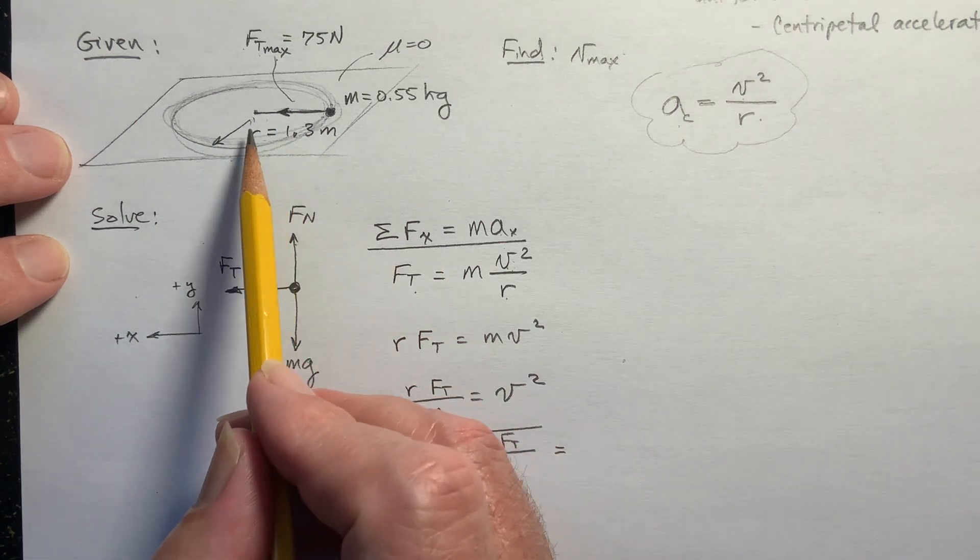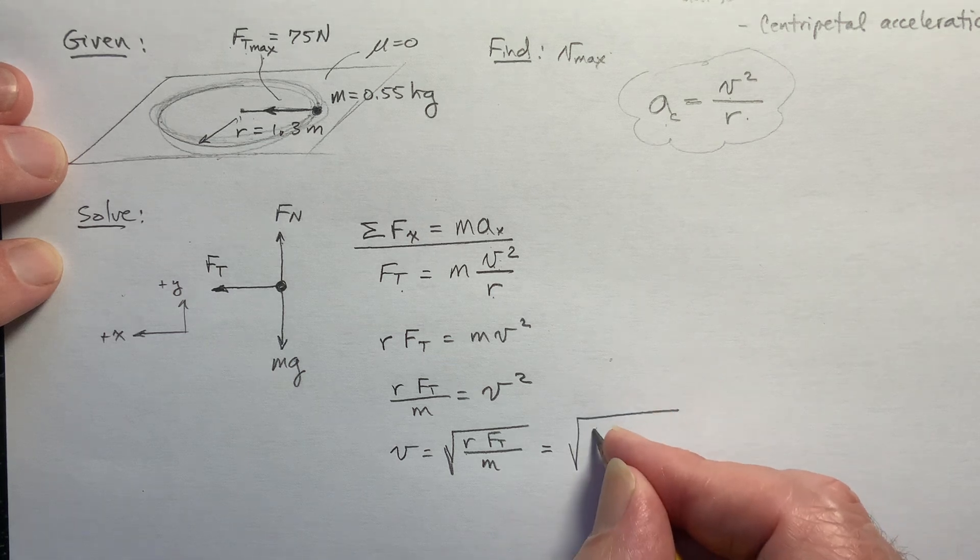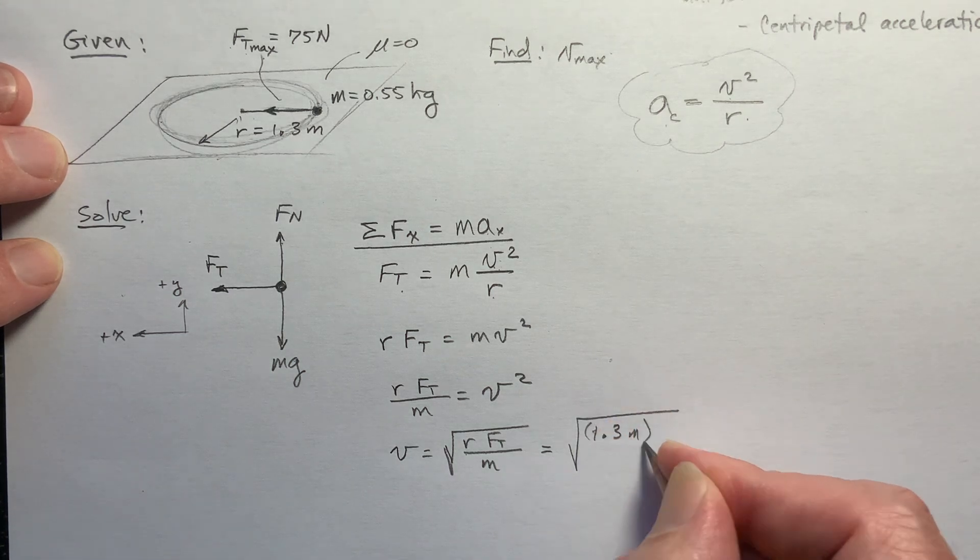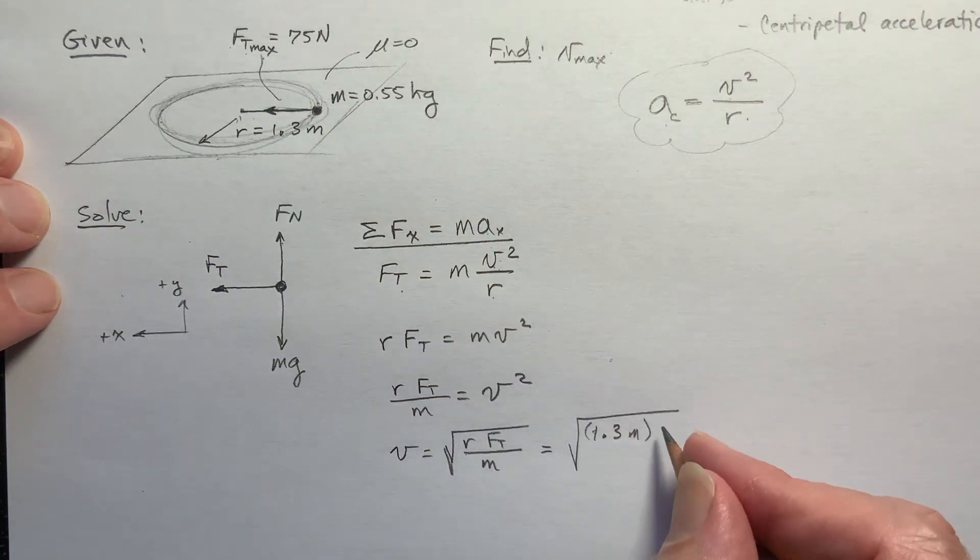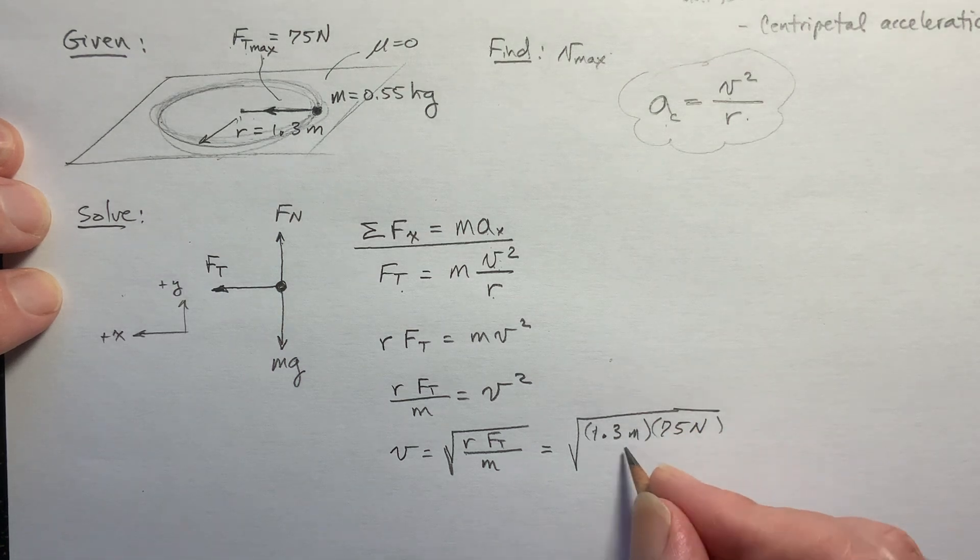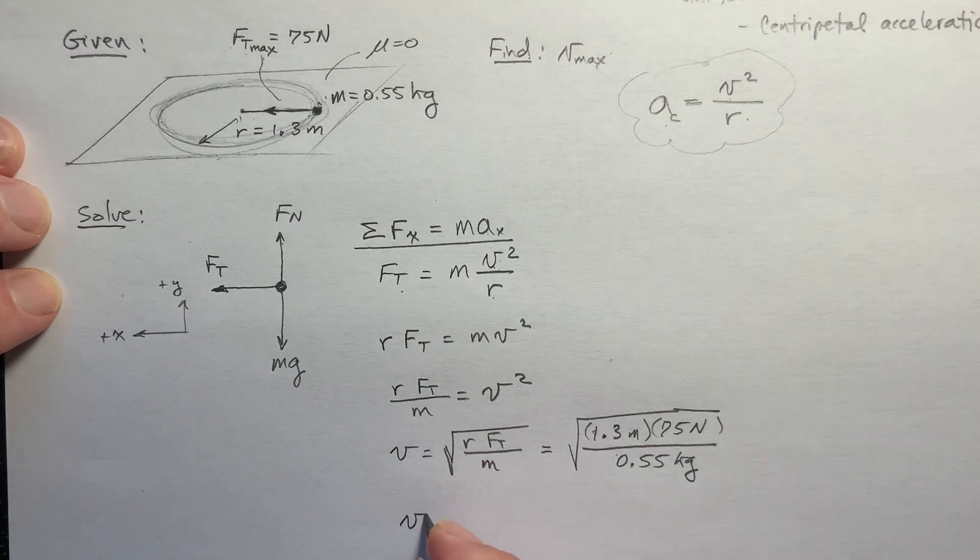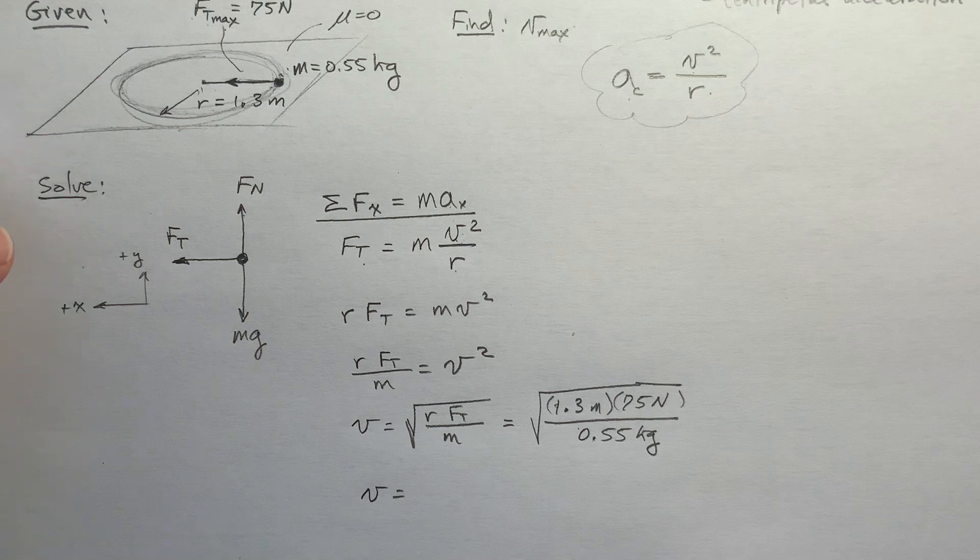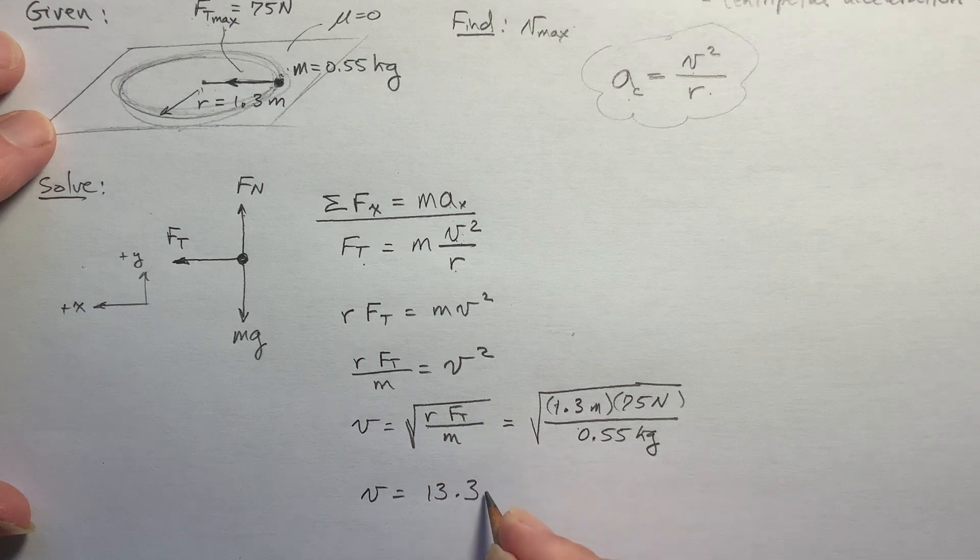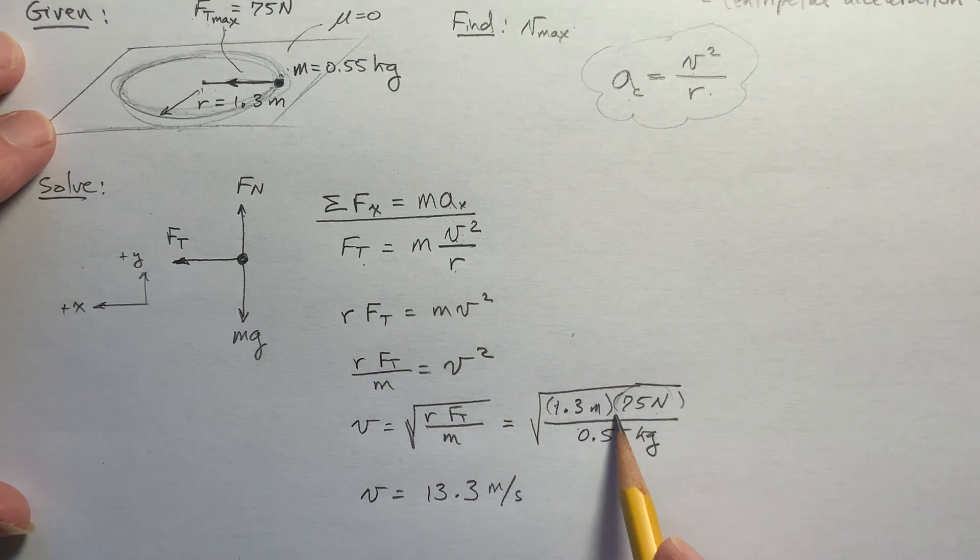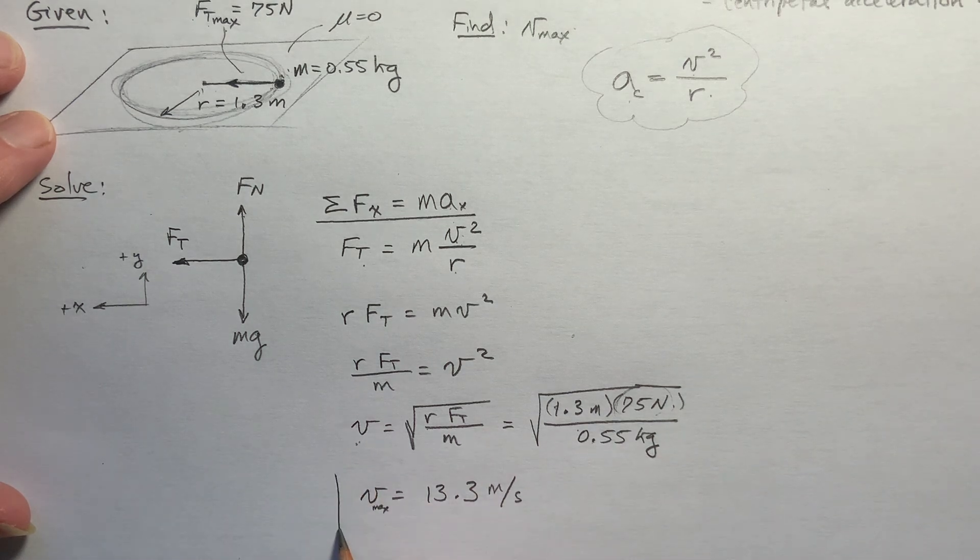We know what the radius is. That was given to be 1.3 meters. And the maximum force that we can have before this string snaps is 75 newtons. And we were given the mass of the ball at the end of the string, 0.55 kilograms. And when we calculate all that, we get an answer. Just plug that in your calculator and you should get 13.3 meters per second. And since this is the maximum force, this will be the maximum speed I can go as I go around that circle. There we go.